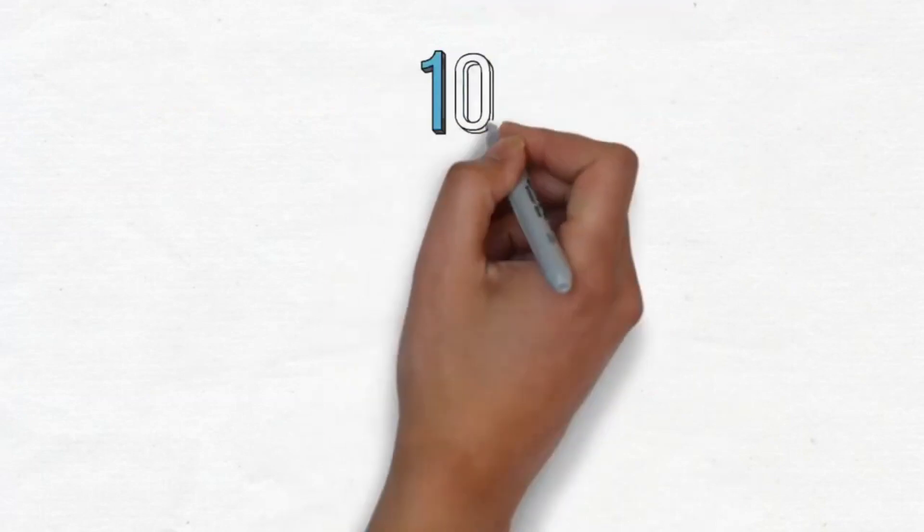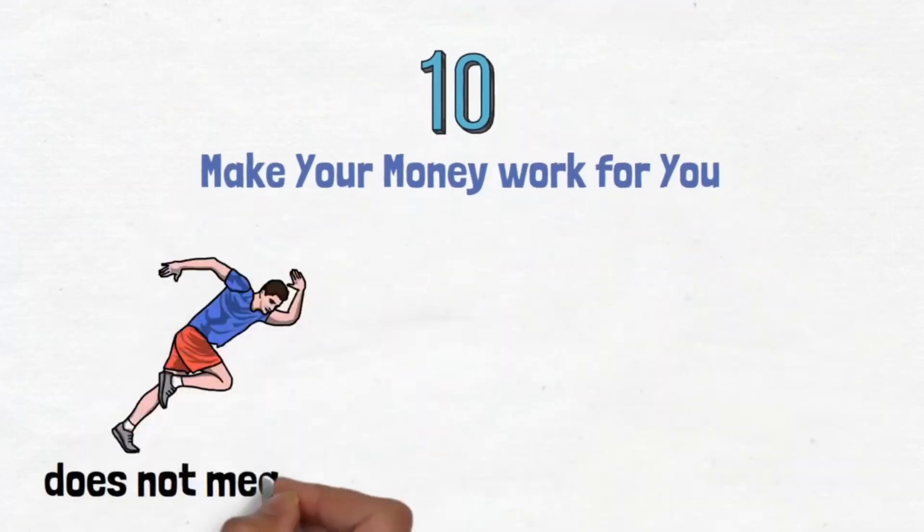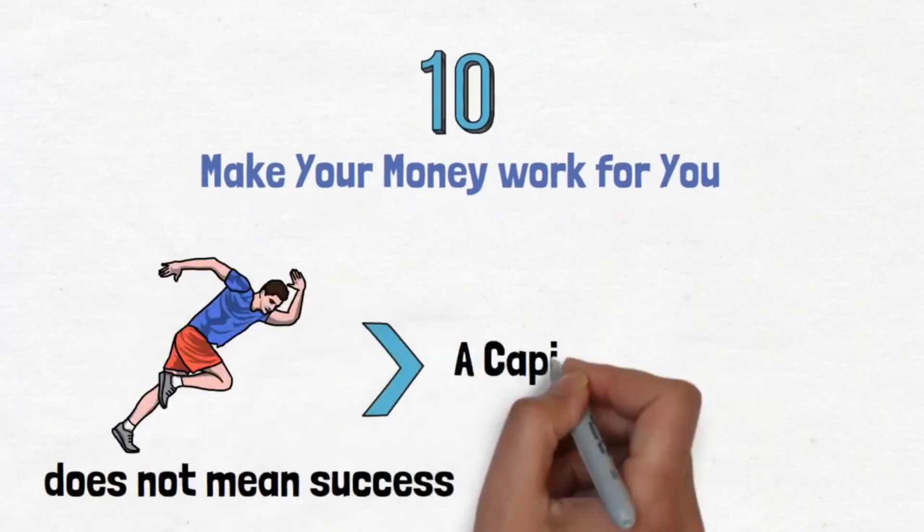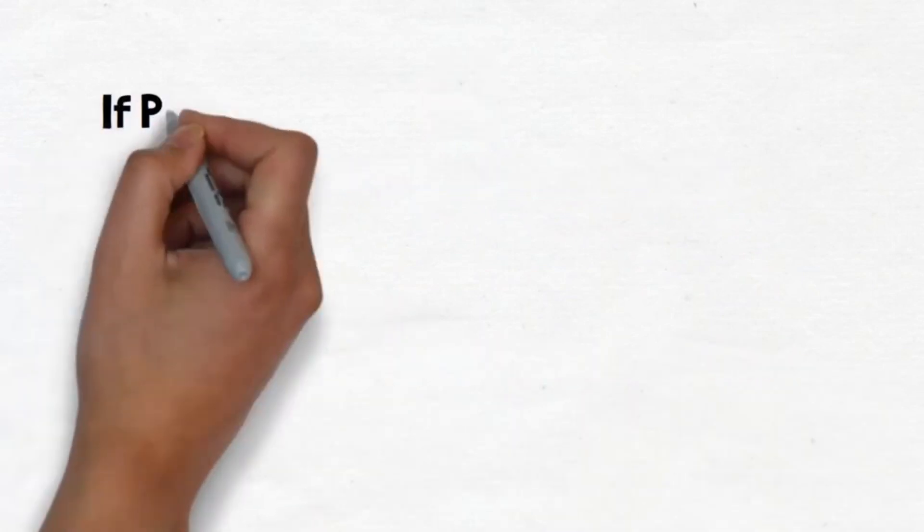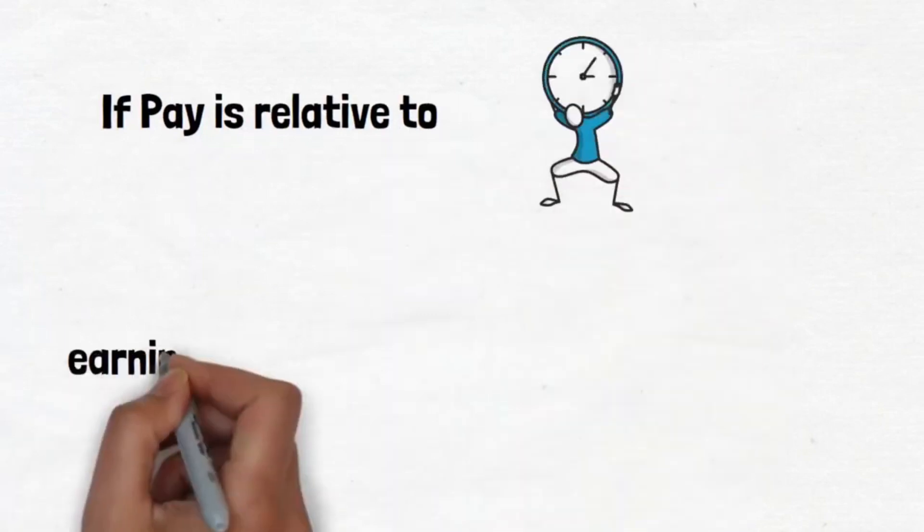10. Make your money work for you. Working hard does not always equal success, which is one of capitalism's unpleasant facts. If your primary source of revenue is time exchange, your earnings potential is limited to the amount of hours you labor per week.